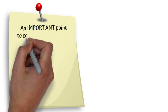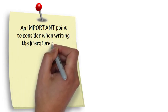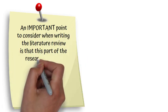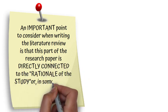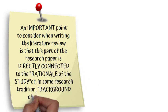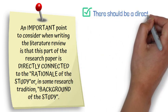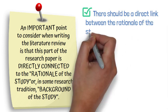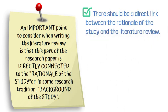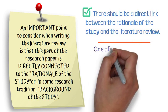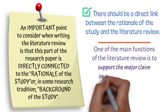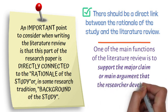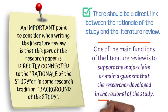Another important point to consider when writing the literature review is that this part of the research paper is directly connected to the rationale of the study, or in some research traditions, the background of the study. Hence, there should be a direct link between the rationale of the study and the literature review. One of the main functions of the literature review is to support the major claim or main argument that the researcher developed in the rationale of the study.